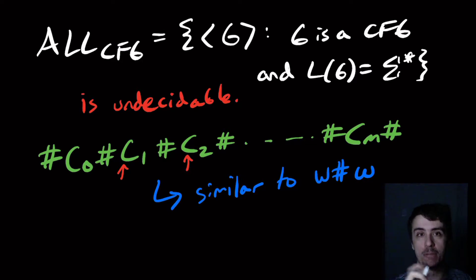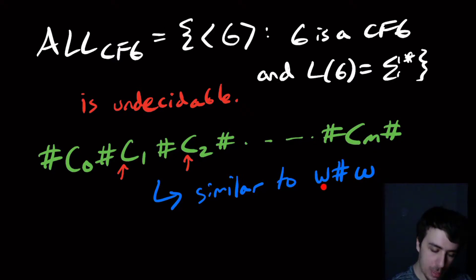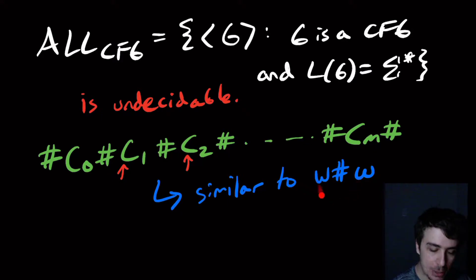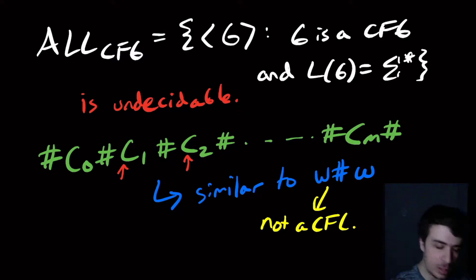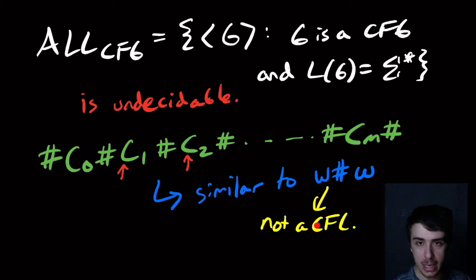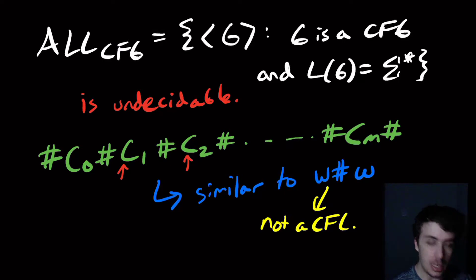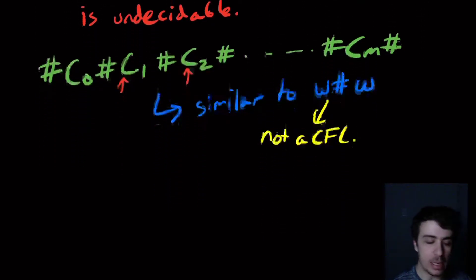There are only a finite number of possible changes because there are only a finite number of transitions, so it's very similar to the problem where we have the same string on both sides of the pound sign. But if you recall, w#w where w is any string in {0,1}* is not a context-free language at all. So what we need is something that is better phrased for context-free grammars, and fortunately there is another way.